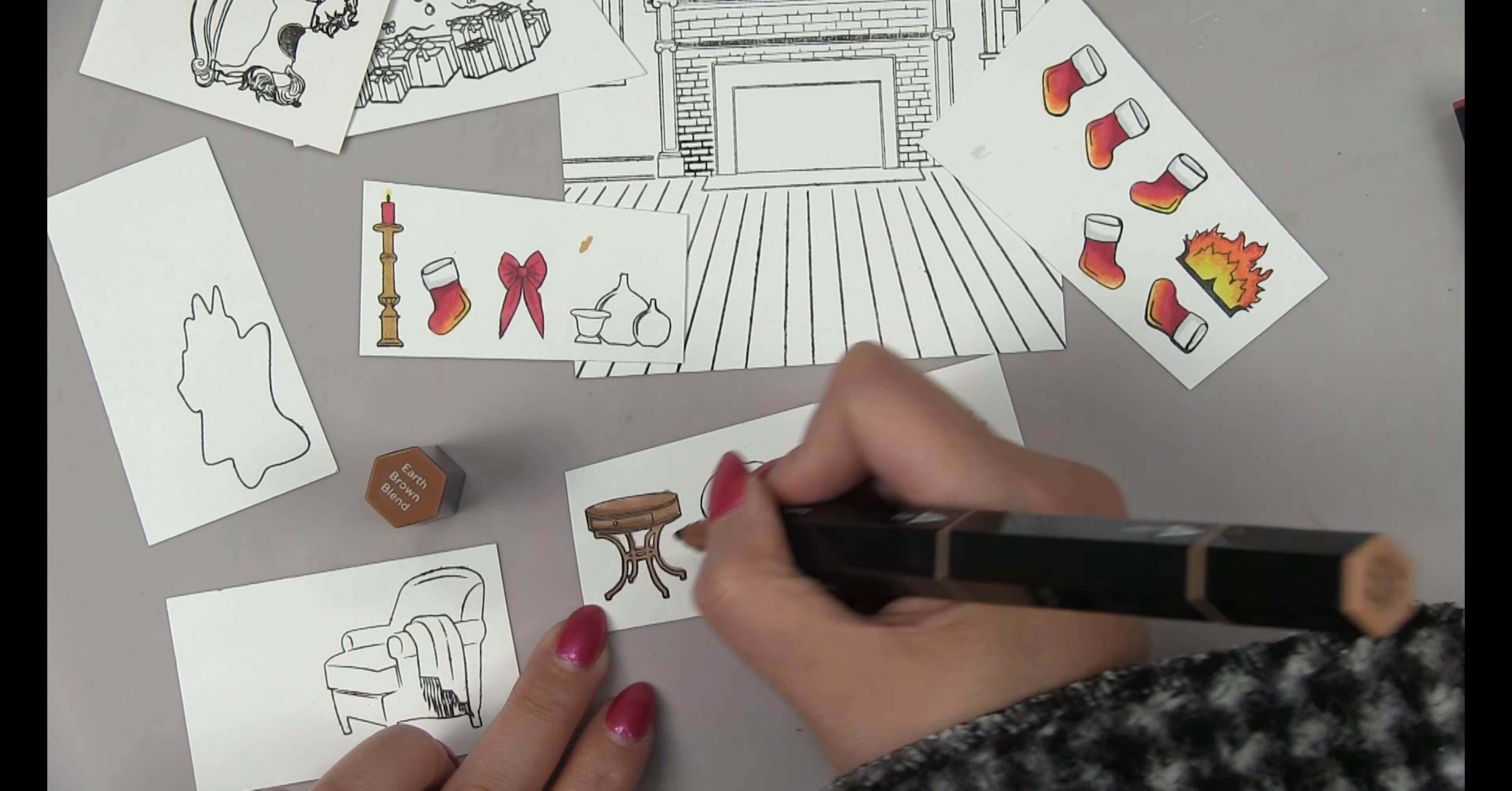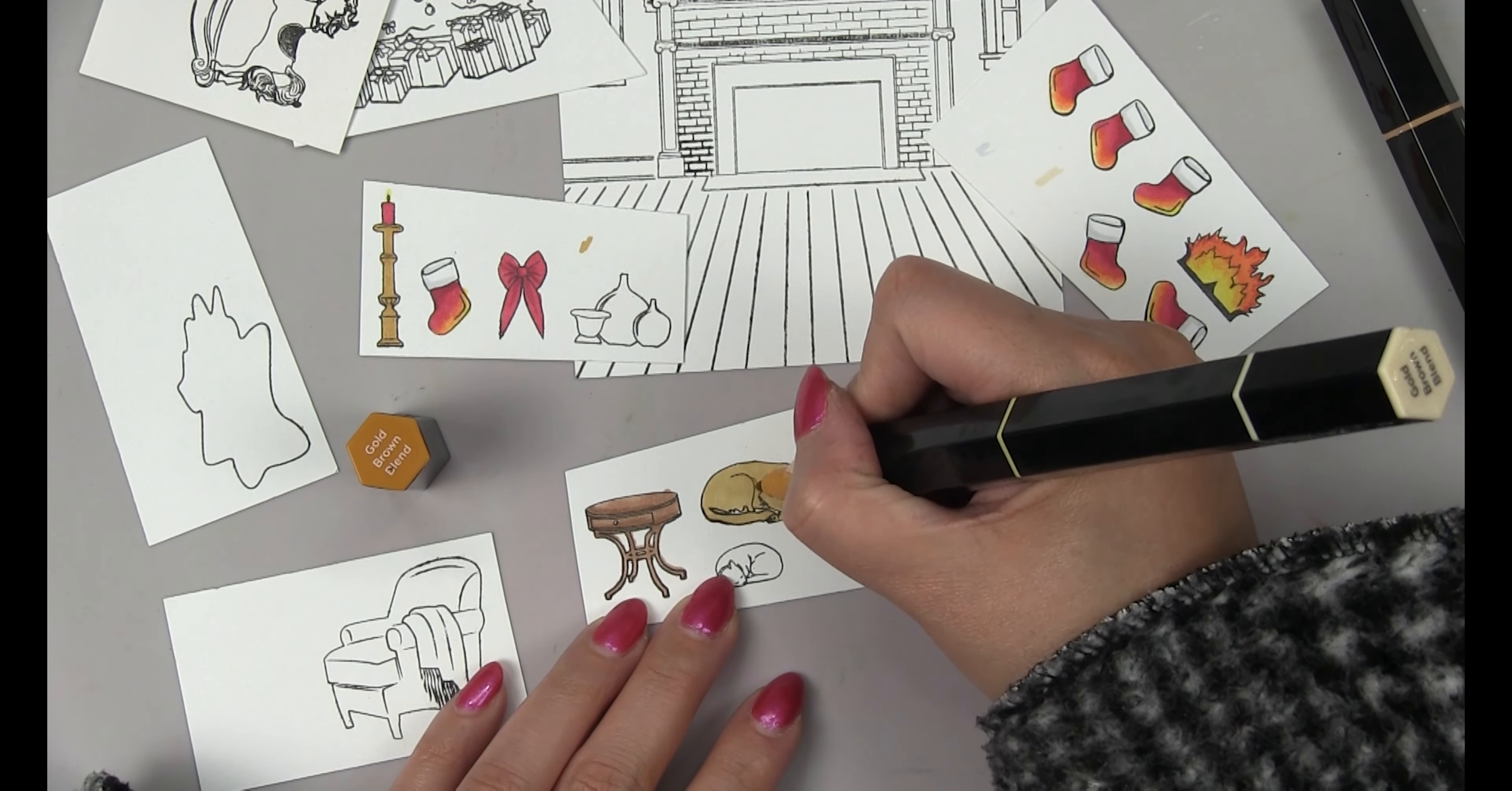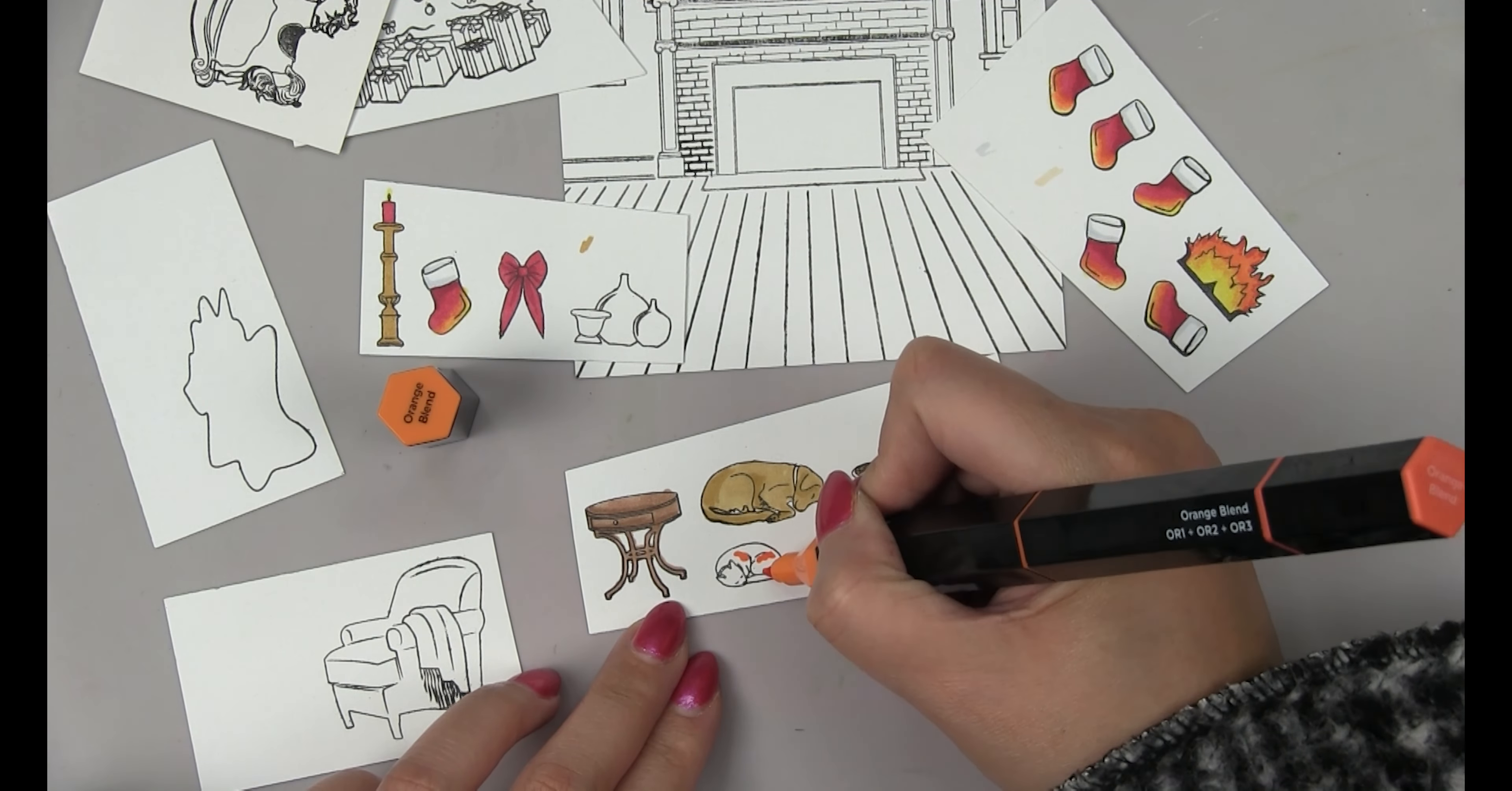Then for the end table I used the light shade and the dark shade of the brown colors and then for the pup I used the gold brown blend and then used the brown marker to add shading to the dog. For the cat I added orange stripes and then I used the light grayish bluish marker for the rest of the cat's body. Then I added red and blue to the small nutcracker.